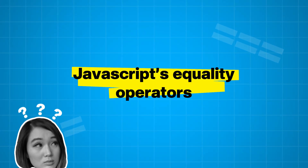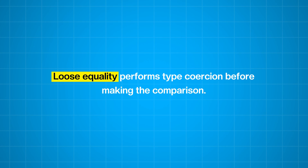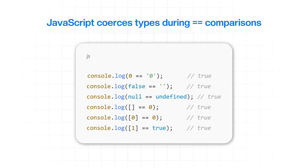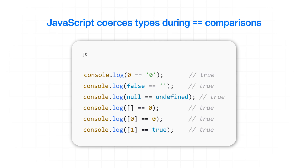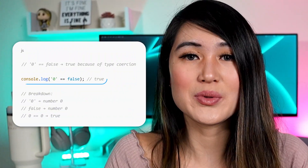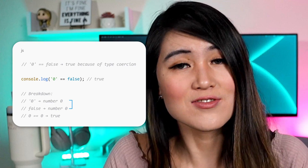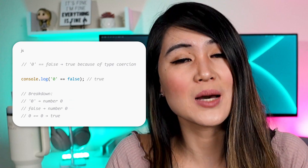This ties into the next topic: JavaScript equality operators. We have loose equality (double equals) and strict equality (triple equals). Loose equality performs type coercion before making the comparison, meaning that even though you might be comparing two completely different types of data, JavaScript will try to make them the same before checking if they are equal. For example, the string 0 double equals false evaluates to true because JavaScript coerces both the string 0 and false into the same type — both become the value false.